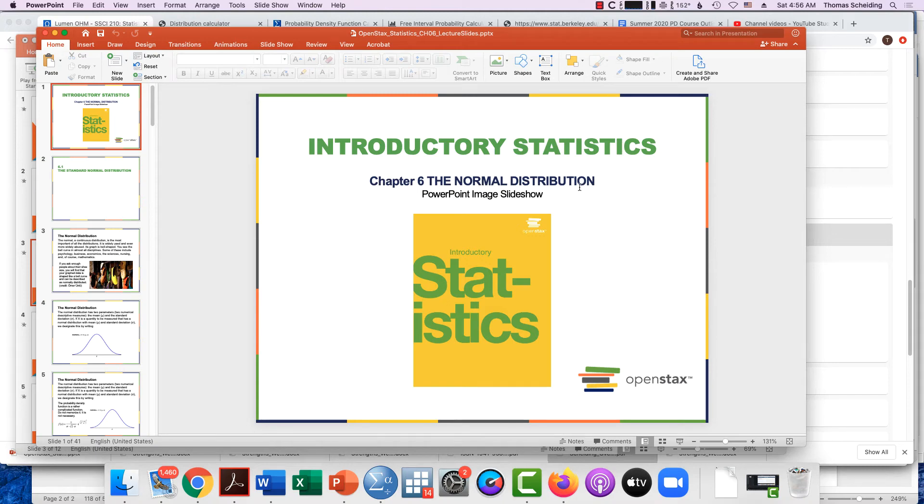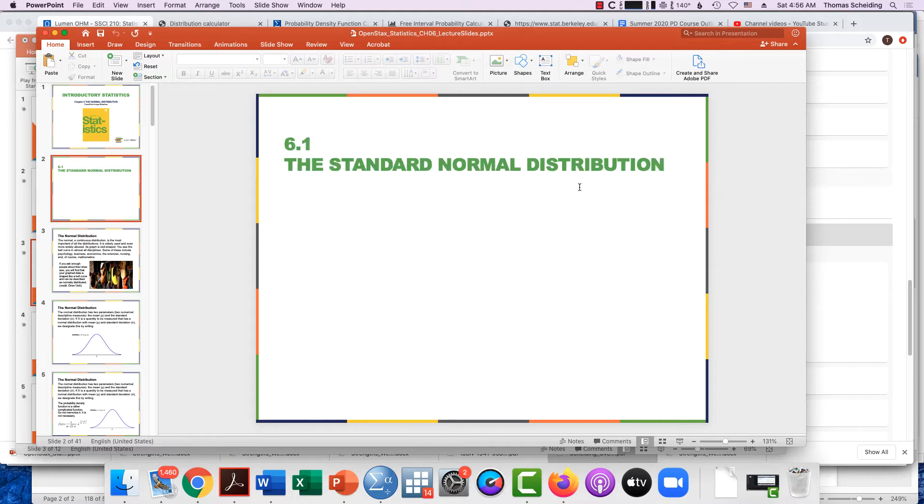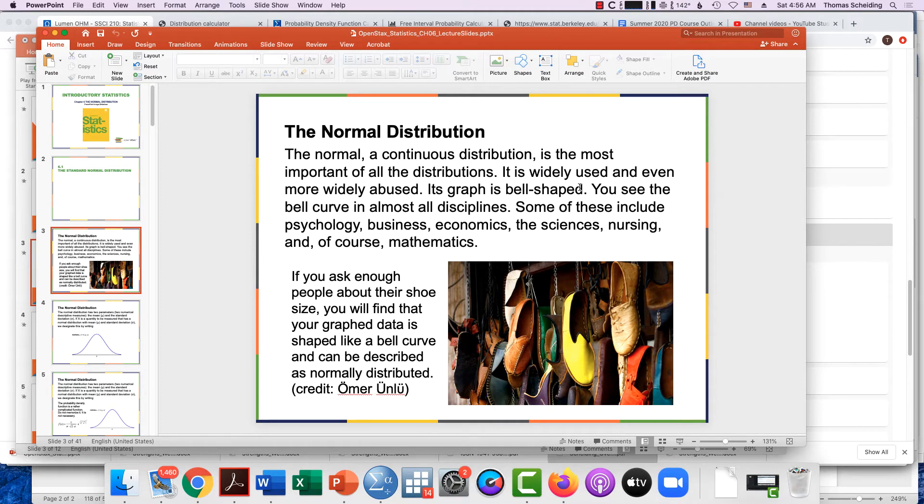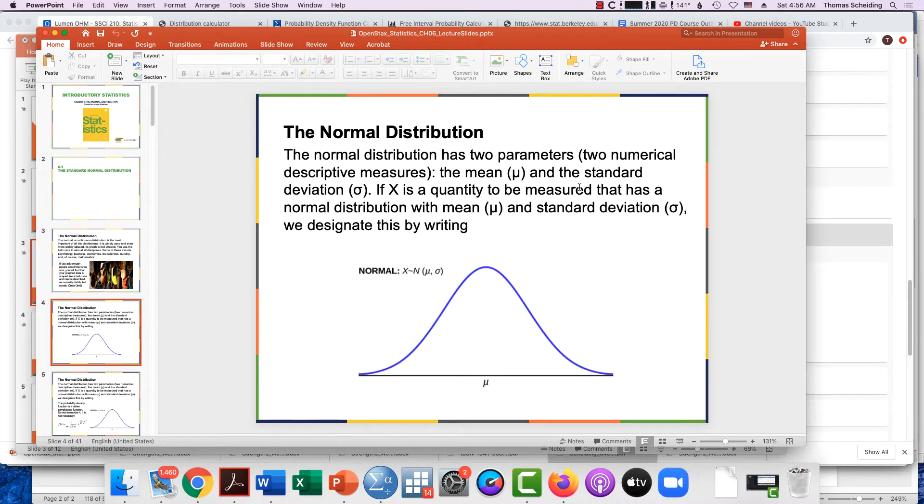So now after looking at continuous probability functions, let's look at the normal distribution. We've seen this one you've probably seen this many times even before this course and that's your continuous distribution function that's shaped like a bell curve, meaning it's peaked in the middle and then you have long tails on the left side and the right side.